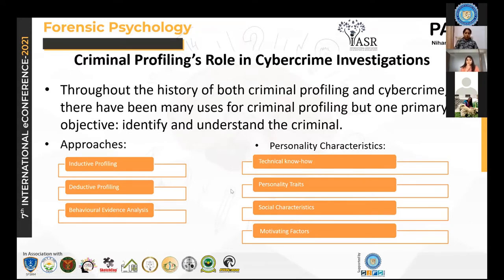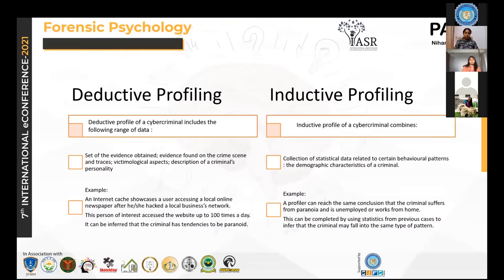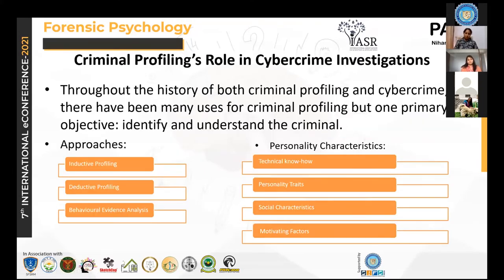In personality characteristics, we have technical know-how — the degree of a person's knowledge in particular software or snooping devices used to carry out a crime. A person can be labeled as intelligent or high IQ, and can be termed a strategic planner or a bully. Personality traits are the inherent qualities or personality makeup of a person which are predisposed and tend toward the criminal side — for example, highly impatient or extremist behavioral people, and insensitive people.